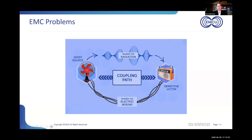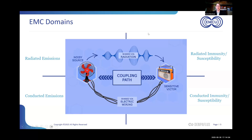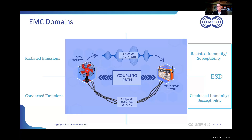That coupling path can either be over the air by radiation or conducted through shared electrical wiring. When you look at the way EMC standards are written, they treat this as four quadrants. If you're trying to quiet down the source, you're looking at radiated emissions or conducted emissions testing. If you're trying to make sure that the victim is robust enough, you're looking at radiated immunity or susceptibility, and then the same for conducted. Then there's ESD, which usually ends up being part of EMC testing mostly because it's very convenient to do in an EMC lab — and ESD has elements of both conducted and radiated immunity.